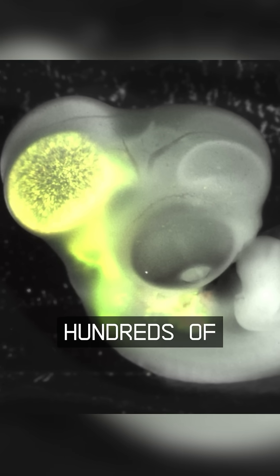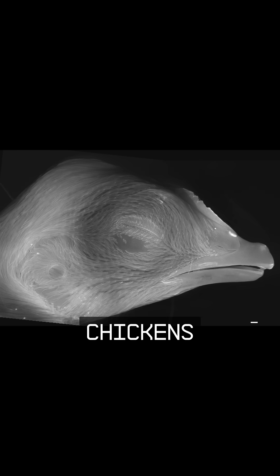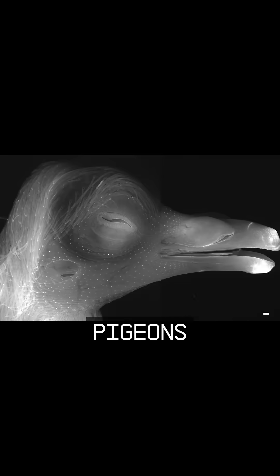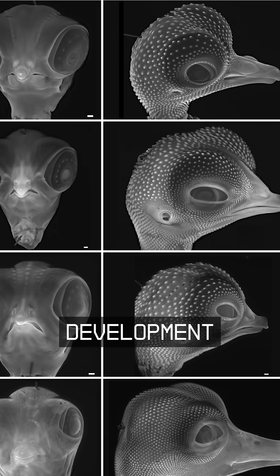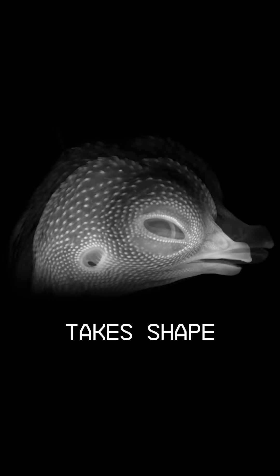We're also collecting hundreds of craniofacial tissue samples from chickens, ducks, quail and pigeons at several different stages of development. Sequencing these shows us which genes switch on and off as a bird's face takes shape.